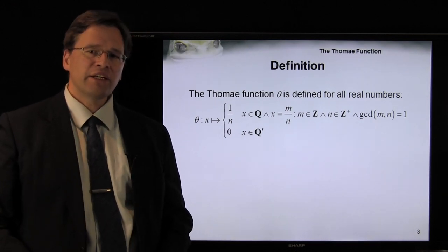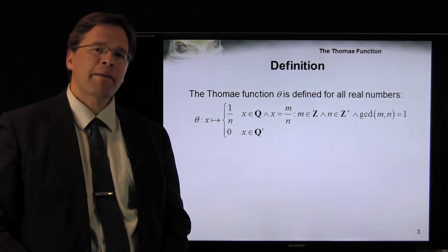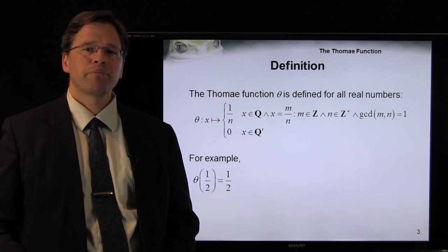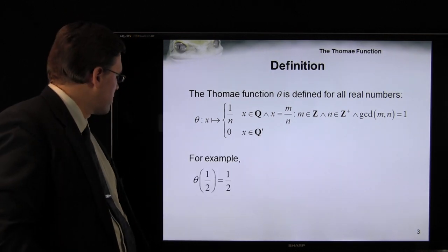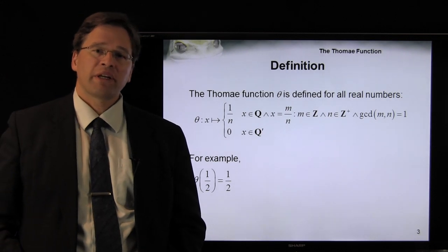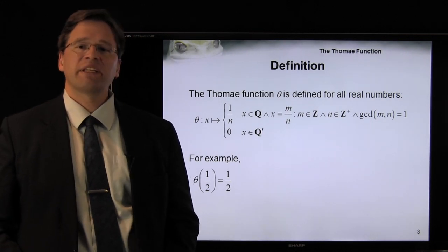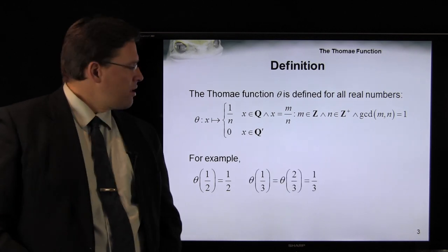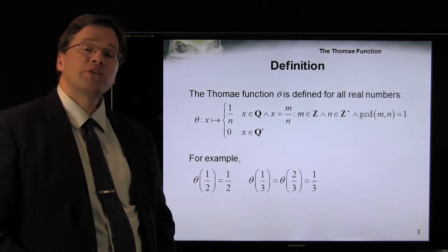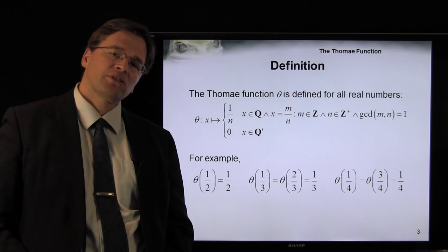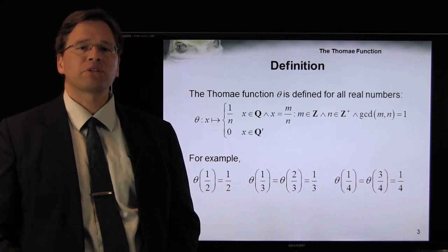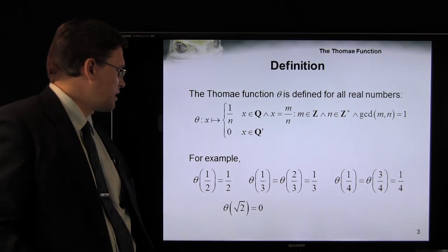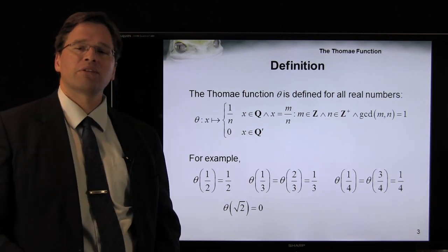Alternatively, if x is irrational, we map x onto the value 0. For example, the Thomae function evaluated at 1/2, 3/2, 5/2, and negative 1/2 all equal 1/2. The Thomae function at 1/3 and 2/3 is 1/3. The Thomae function at 1/4 and 3/4 is also 1/4. The Thomae function at, say, root 2 is 0.